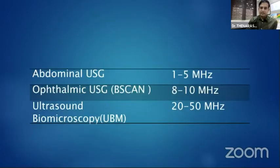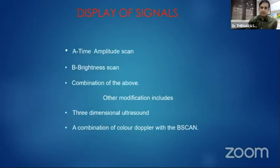These are the different frequencies used in different ultrasound probes. We have the time-amplitude A-scan, brightness B-scan, and a combination of the above. In addition, we have three-dimensional ultrasound and a combination of color Doppler with B-scan.